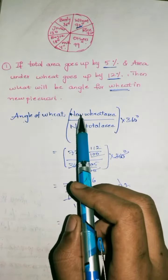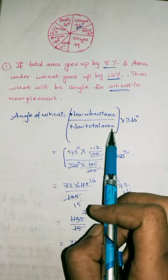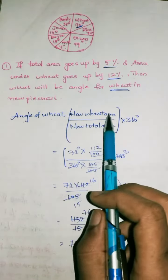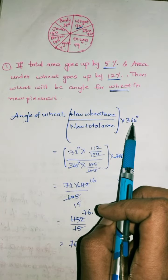In general, angle of wheat is new wheat area by new total area. The angle of wheat equals wheat area by total area times 360 degrees, since it is an angle.